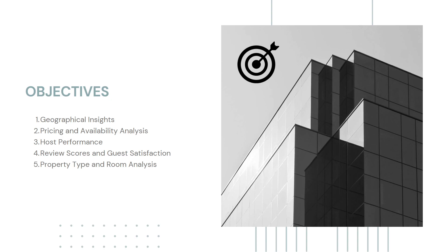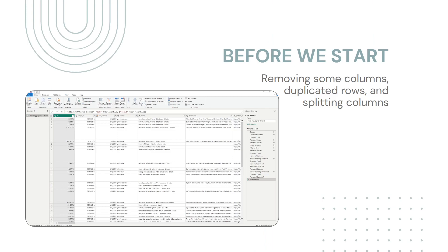The objectives are to provide some graphical insights, pricing and availability analysis, host performance analysis, review scores and guest satisfaction analysis, and finally property type and room analysis. Before we start, we import the dataset — the CSV file that we were provided — and I removed some of the columns, the duplicated rows, and I split columns such as state/city and country, which are two columns I made from a single column called host location.